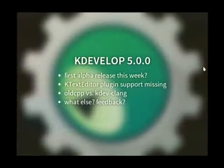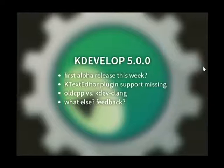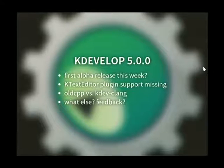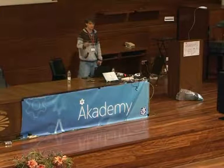KDevelop 5.0.0 is looking good in my opinion. I really want to release the first alpha or beta this week. What's really missing is proper support for KTextEditor plugins so we can share even more code — meaning we can remove stuff on our side. The big open question is: do we want to ship something with the old CPP plugin still enabled, or do we want to go directly to KDev Clang? I actually tend nowadays to the latter, but feedback on that is very welcome.